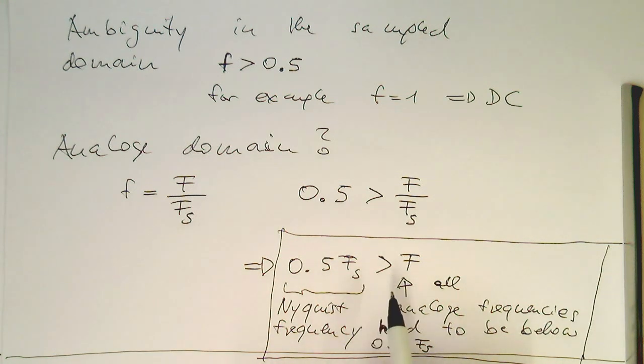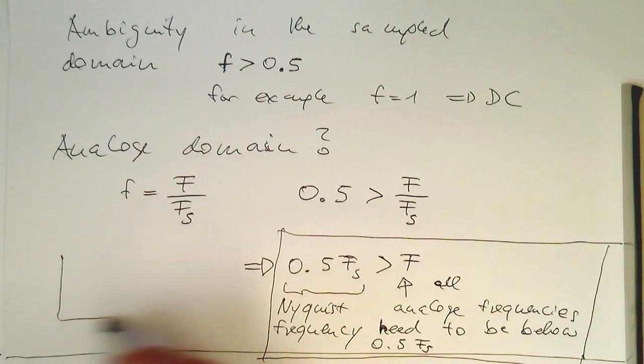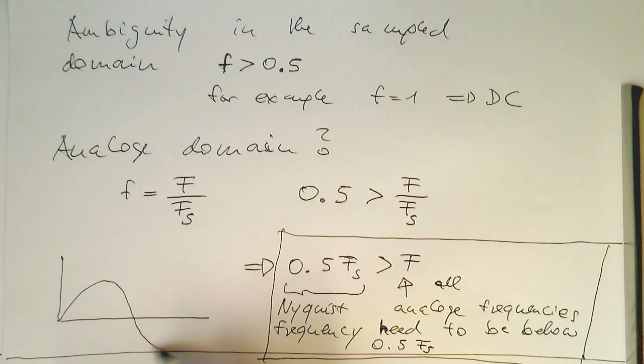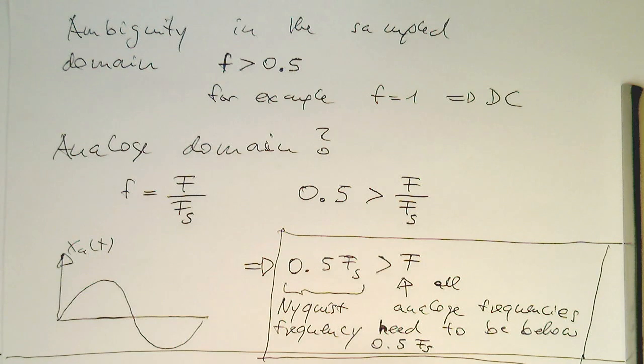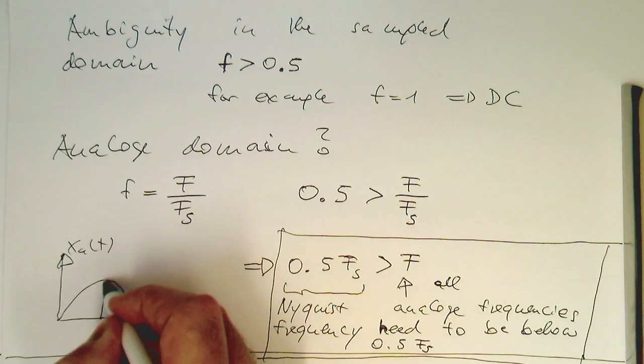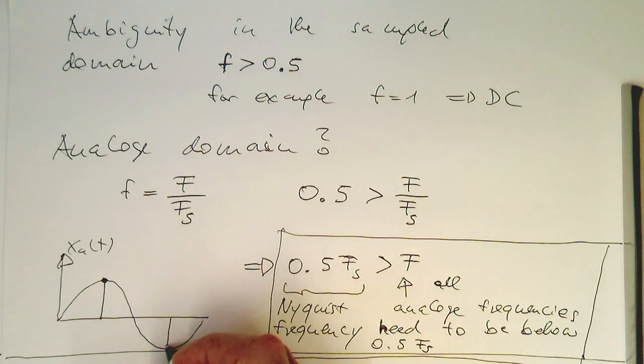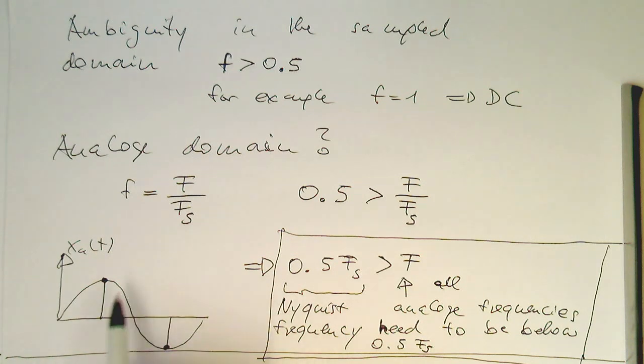Again, this reflects the same idea as in the sample domain, that if we have a sine wave in our analog domain here, so that's our x a of t, we need to at least sample it here, and we need to sample it here, to be able to recover this frequency. So we need to have a peak and a valley, and this obviously gives us the maximum frequency here is half the sampling rate f s. So this is the Nyquist frequency represented here in the analog domain.